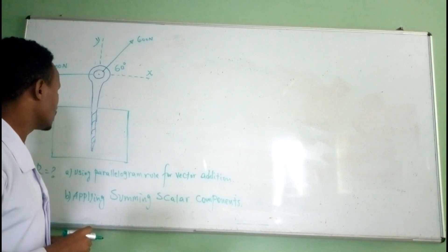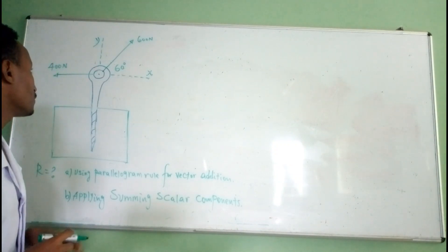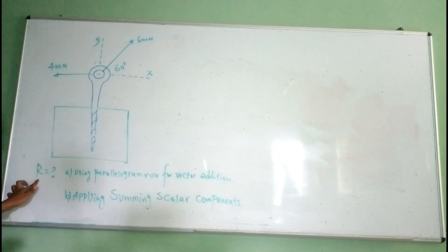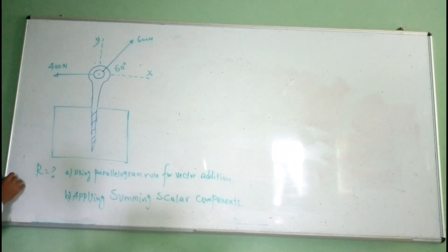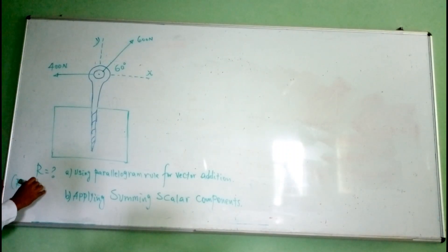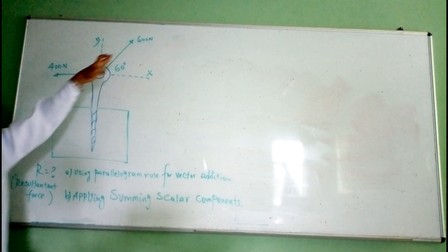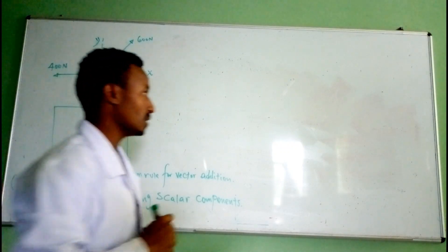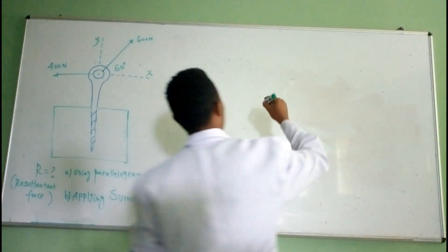We have a 600 N load. How can we determine the resultant R for these two forces? We are asked to calculate the resultant force R. Let me show the method — how we can solve this using the parallelogram rule when we have two force vectors.